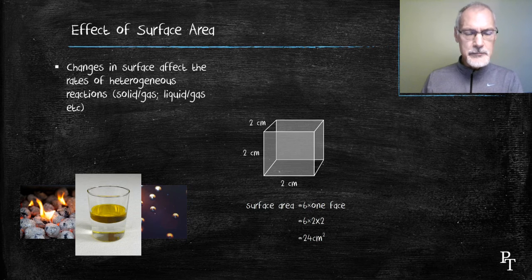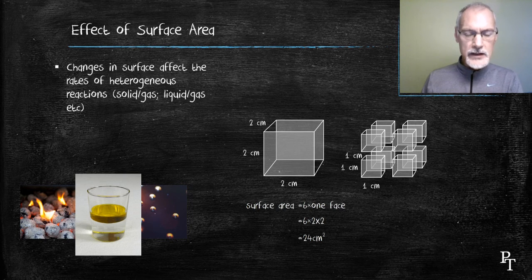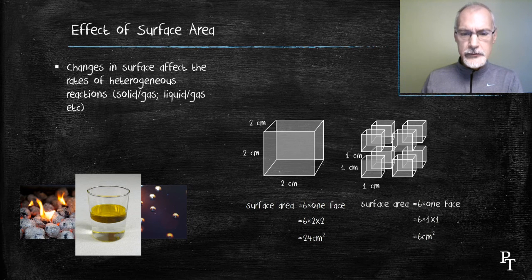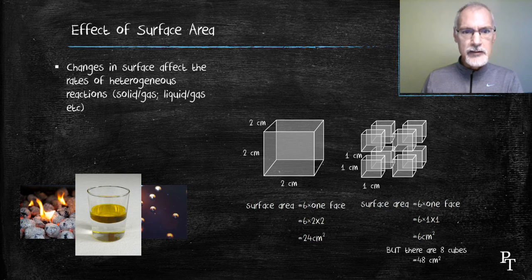If I take that same piece of charcoal and cut all of the dimensions in half, I create the following. My cubes are now one by one by one, and the surface area of one of those cubes would be six square centimeters. But I also produce eight cubes, so my total area is now 48.